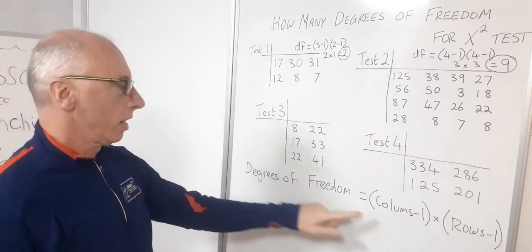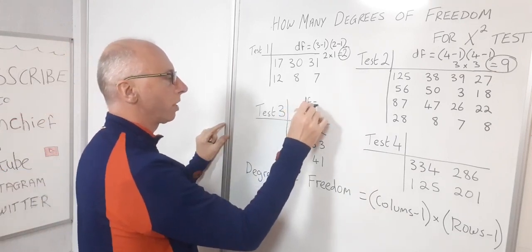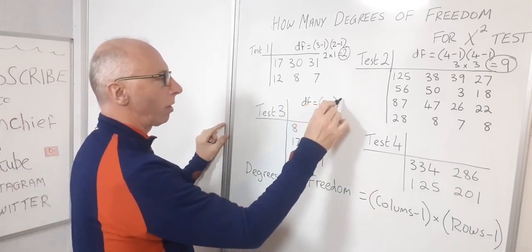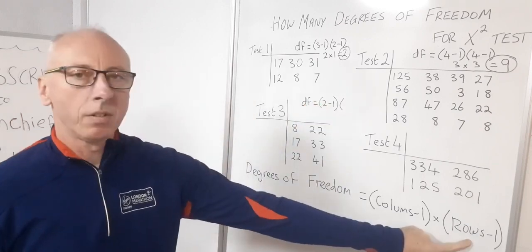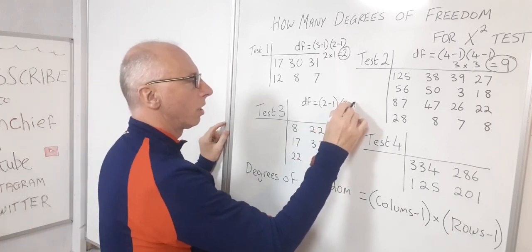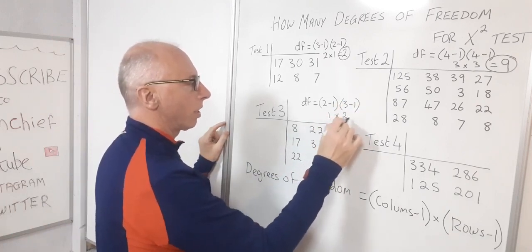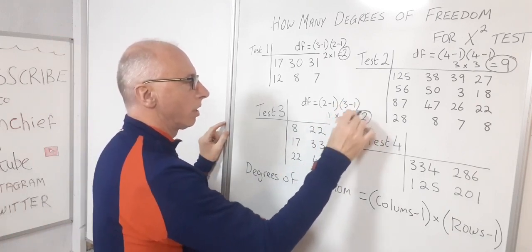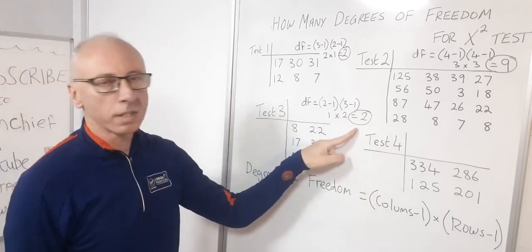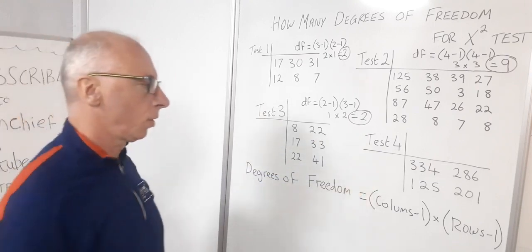Test three: degrees of freedom — two columns subtract one, multiplied by the rows minus one. There are three rows, so three subtract one gives two. That's one times two, so test three has two degrees of freedom.